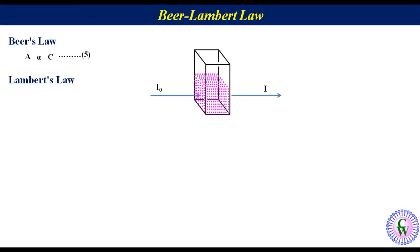Lambert law shows the relation between the absorbance and the path length which is the length that light has to travel through the solution. This is L. According to the Lambert law, A is directly proportional to L. Label it as relation number 6.